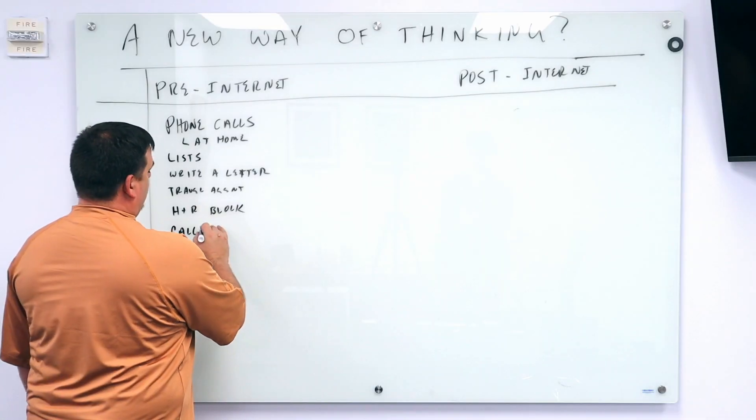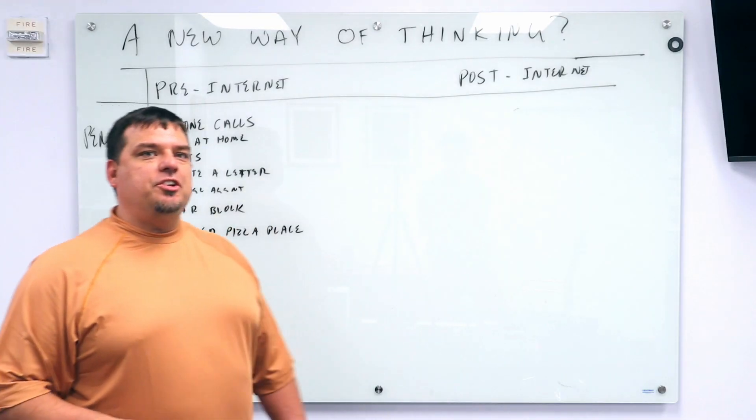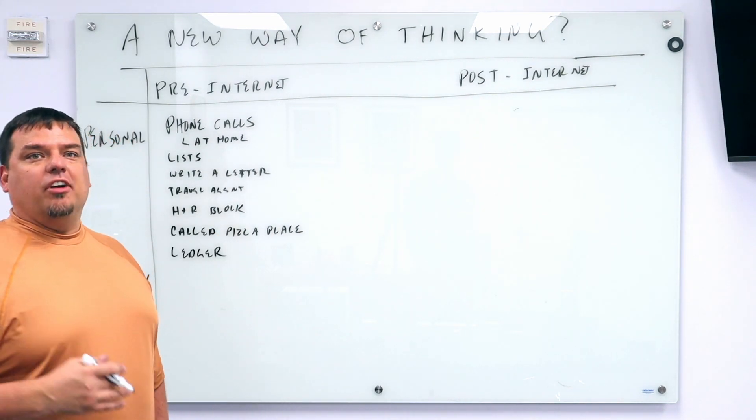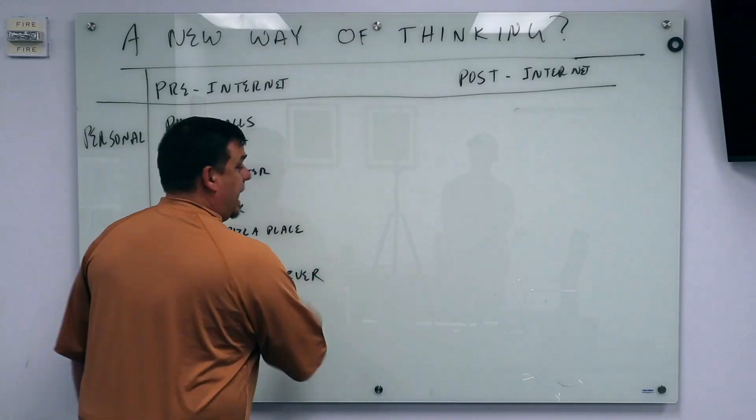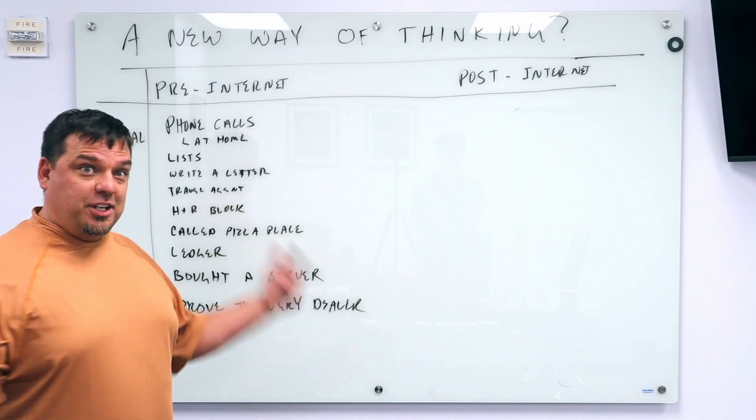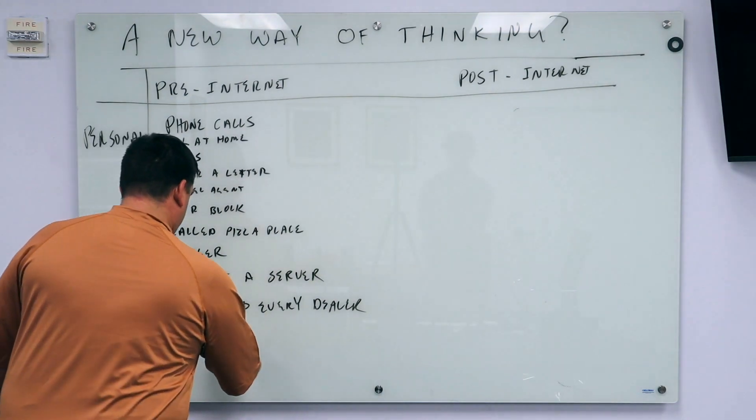How did you order pizza? You called the pizza place. How did you do your accounting? You did it on a ledger. How did you add a new server? You bought one. How did you research cars? You drove to every dealer. How did you entertain yourselves on the weekend? Went to the video store.